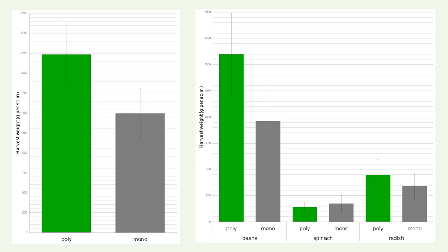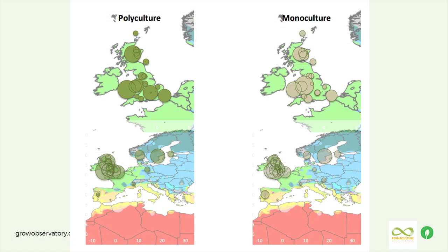A large portion of the difference comes from beans and radish, which tended to be more successful in polycultures. Looking at yields across the growing season — from planting in May through to the latest harvest in November — we see productivity increasing earlier in southern Europe, around Spain and Portugal, and later in the far north. Coming together to share our data gives us really good deep insights. We'll be further analyzing and sharing results in blogs and other media.